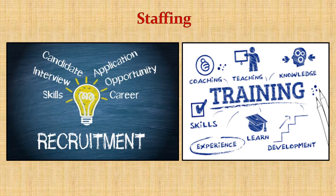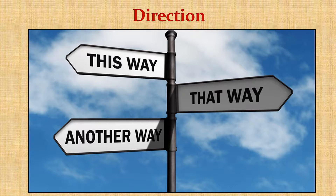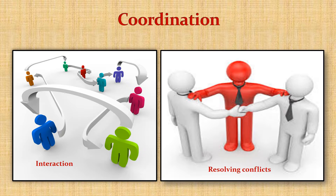Staffing also includes the framing of rules and regulations of civil service. Direction involves providing orders to the various departments. Coordination involves facilitating better interaction between various departments by resolving conflicts and converging their functions.